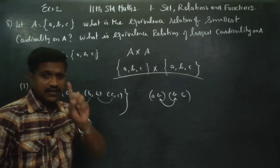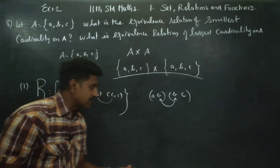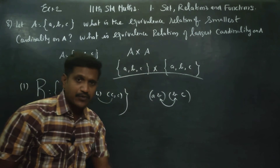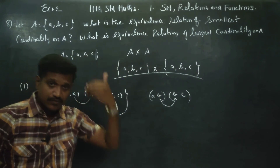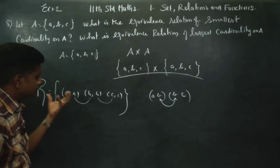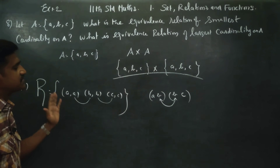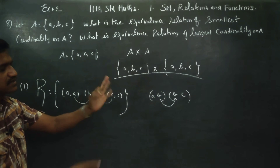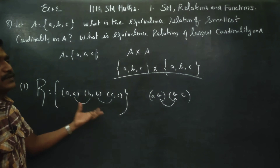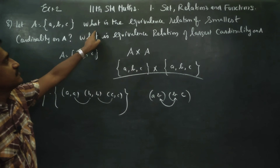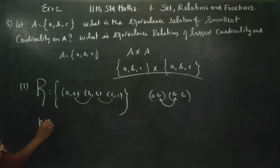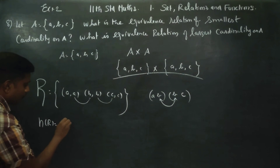Same-same elements: reflexive pass. Reflexive pass, symmetric check — positive. Symmetric pass, transitive pass. That is the smallest set which passes all three tests: reflexive, symmetric, and transitive. So this is the equivalence relation. What is the equivalence relation of the smallest cardinality? The cardinality is 1, 2, 3 — that is 3.